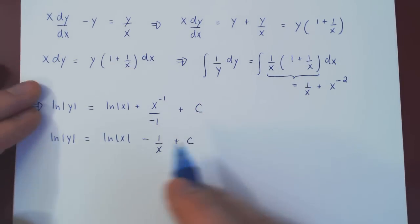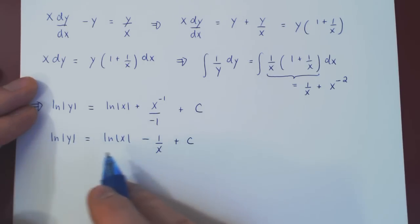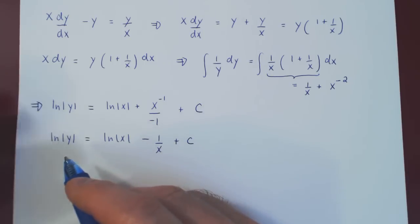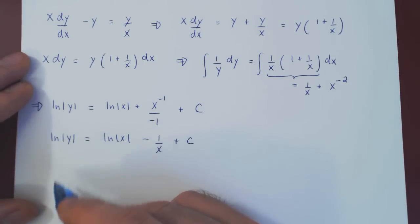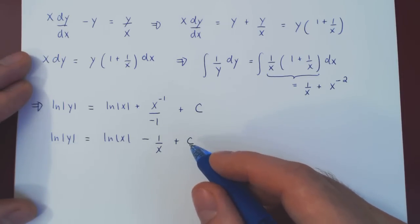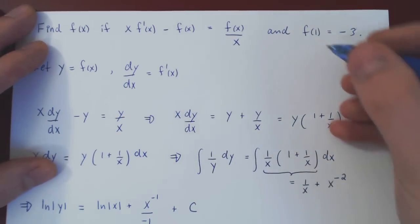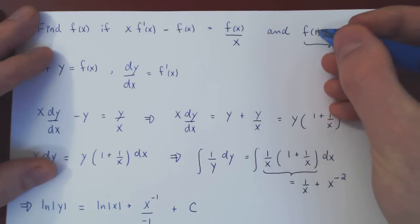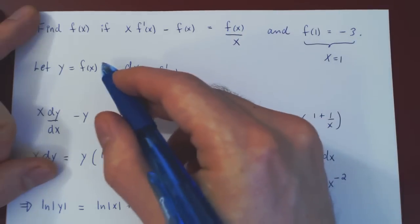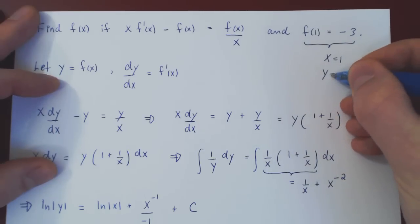It remains to isolate y as a function of x — for some examples this won't be possible, but whenever it is, we should go the extra step. We also need to solve for the arbitrary constant using the initial condition. The initial condition f(1) = -3 translates to: when x is 1, y is negative 3.